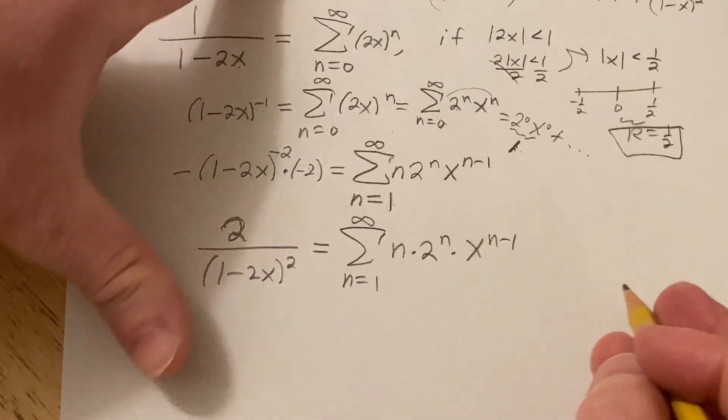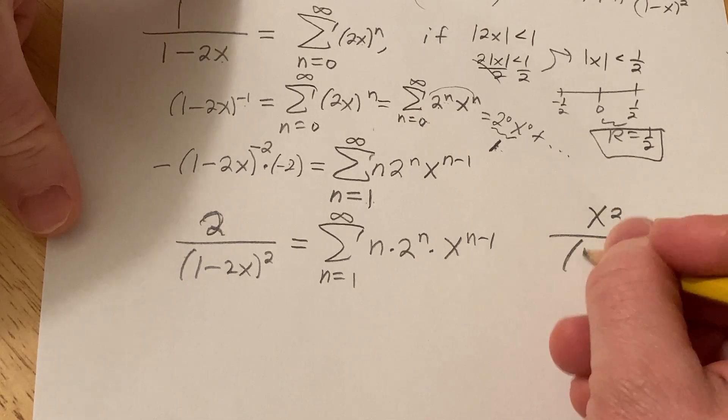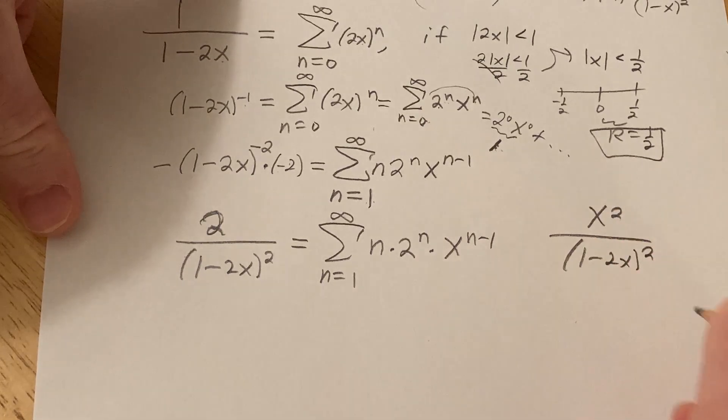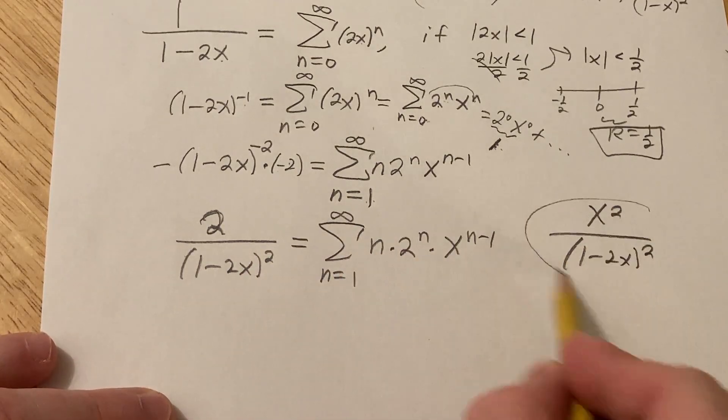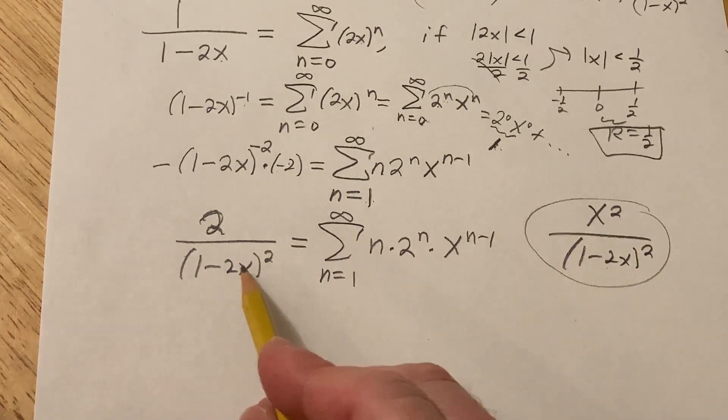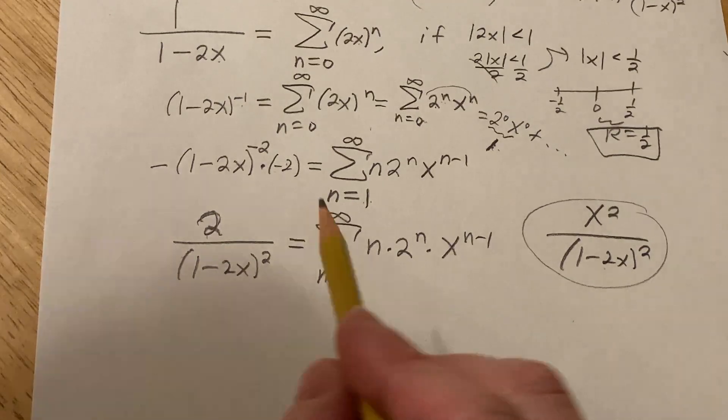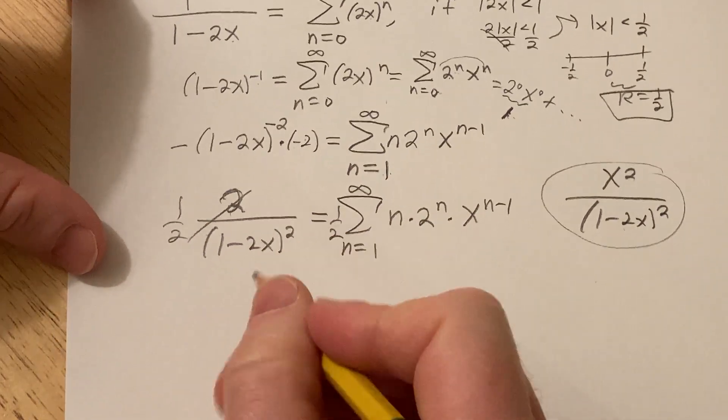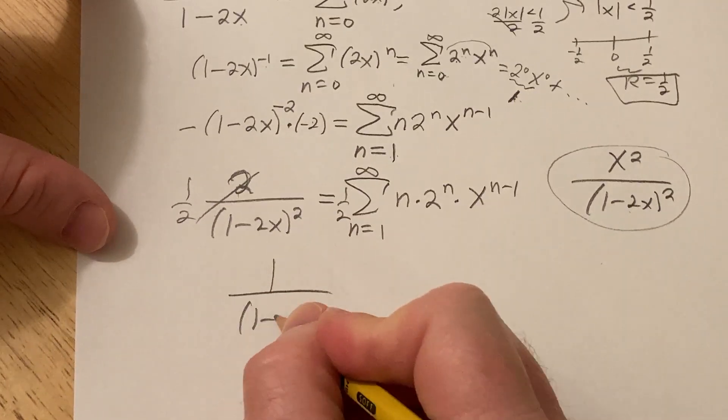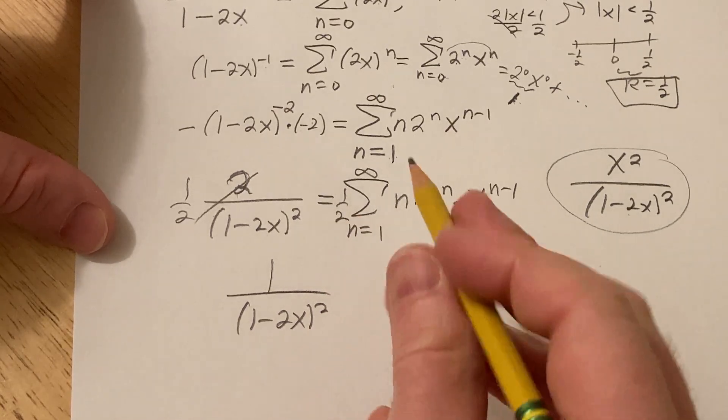And so here we have x squared over, this is what we're trying to get to. Infinite series are really cool. So we need to get this. We need an infinite series for this, and we have this. So I guess we just need to get rid of the 2, which is pretty easy. I can multiply by 1 half.